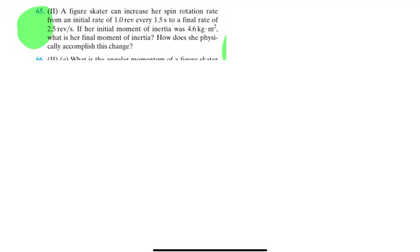A figure skater can increase her spin rotation rate from an initial rate of 1.0 revolution every 1.5 seconds to a final rate of 2.5 revolution per second. If her initial moment of inertia was 4.6 kilograms meter squared, what is her final moment of inertia? How does she physically accomplish this change?